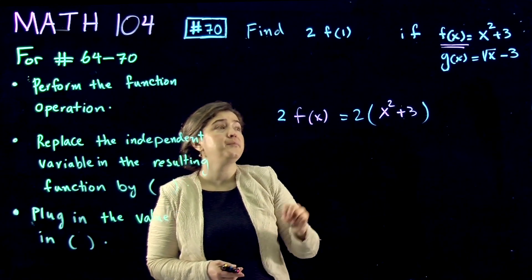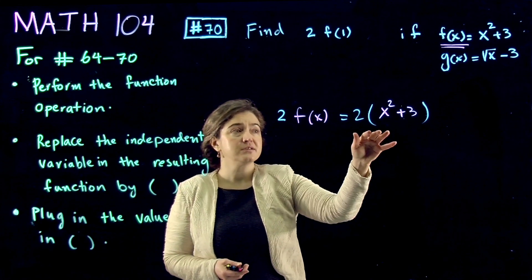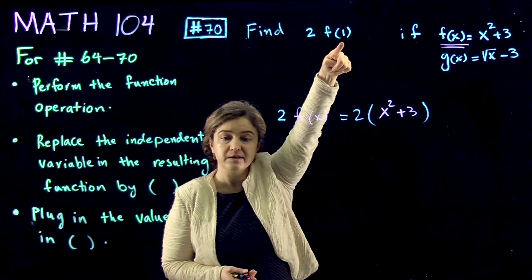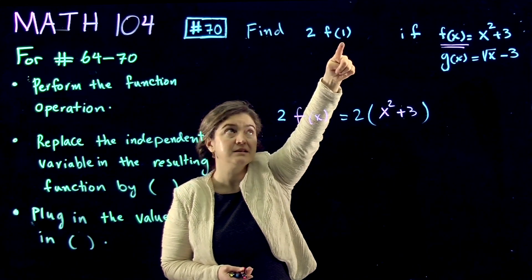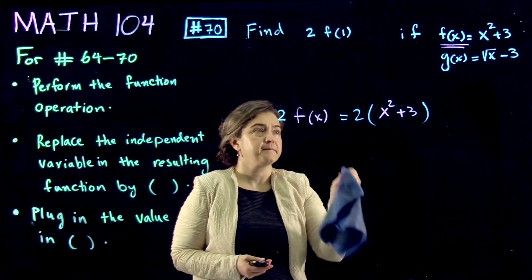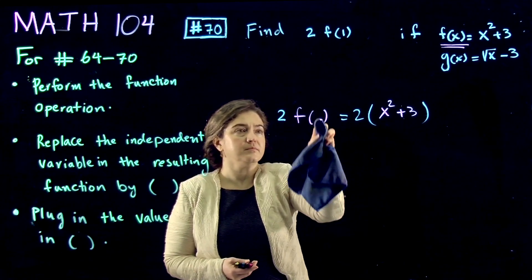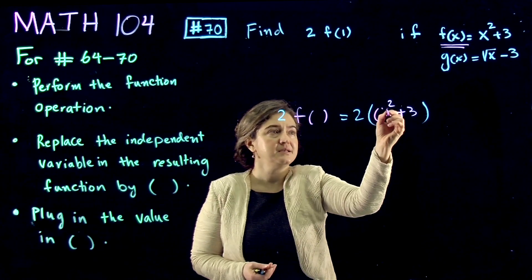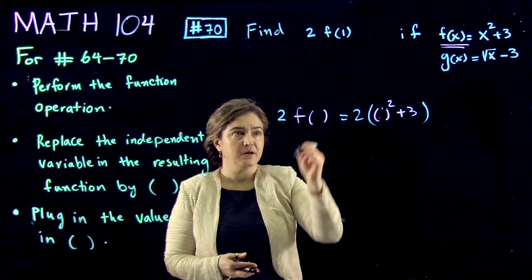And then, now you have the resulting function, and you need to evaluate it at where it's supposed to be evaluated at, which is 1. So, replacing x with big parentheses, plugging in 1.